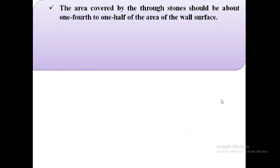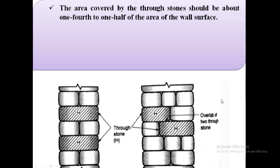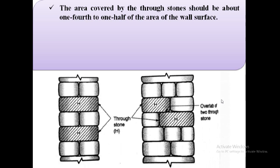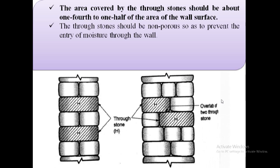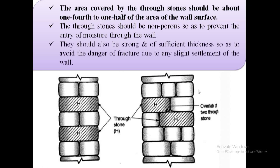The area covered by the through stones should be about one-fourth to one-half of the area of the wall surface. The through stones should be non-porous so as to prevent the entry of moisture through the wall. They should also be strong and of sufficient thickness so as to avoid the danger of fracture due to any slight settlement of the wall.